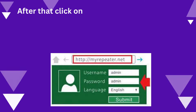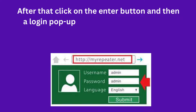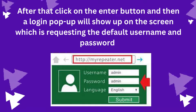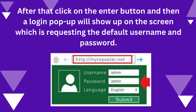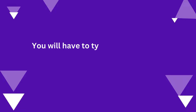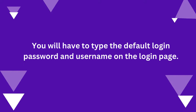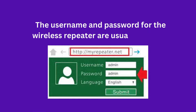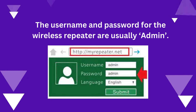After that, click on the Enter button and a login pop-up will show up on the screen requesting the default username and password. You will have to type the default login username and password on the login page. The username and password for the wireless repeater are usually admin.